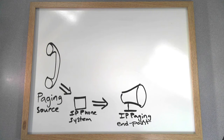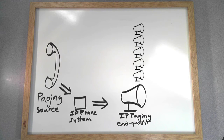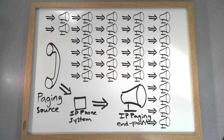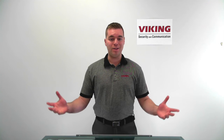Unicast applications involving a lot of paging endpoints or paging zones are going to cause problems quickly. That's because each endpoint or zone requires my phone system to make an additional IP phone call. For example, if I've got 30 IP speakers in my warehouse and I want to make a page, my phone system has to make 30 simultaneous phone calls — one to each of those speakers.